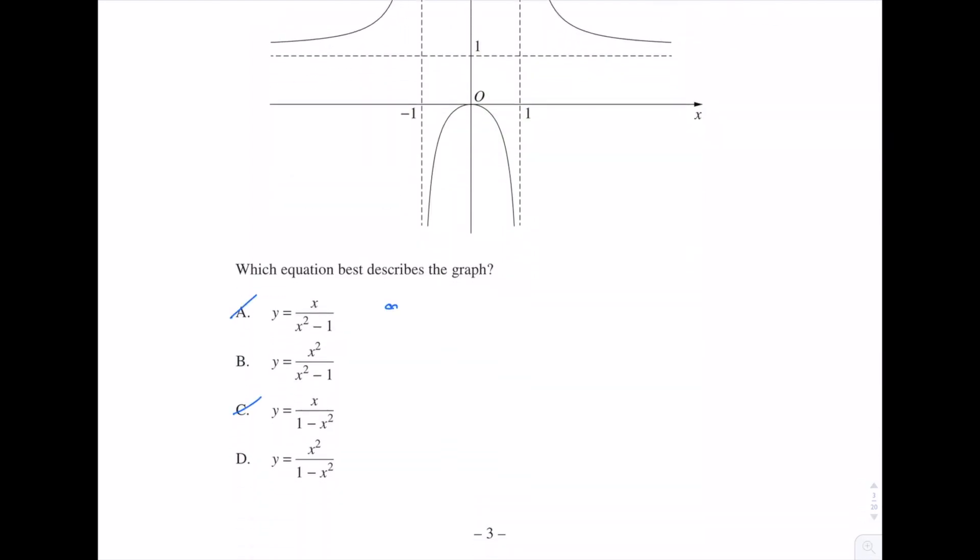Because this is an odd function, x is odd, over x² - 1 is even, which means that the overall function is odd. The same thing here, odd over even, which makes it odd. So that's why we can eliminate A and C.